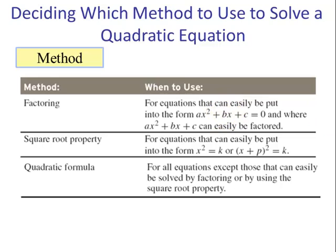The square root property is best to use when the equation can easily be put in the form x² = k or (x + p)² = k.